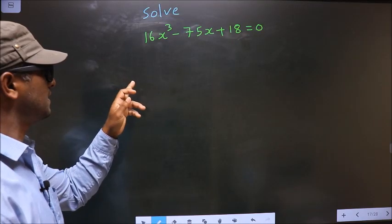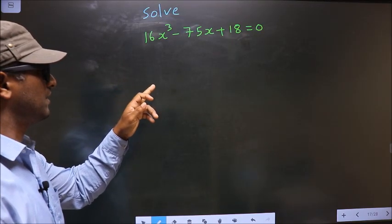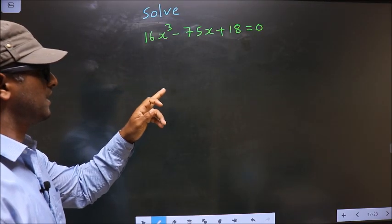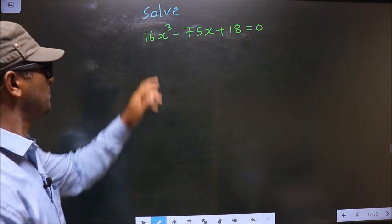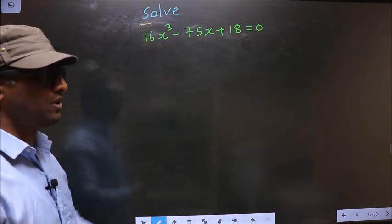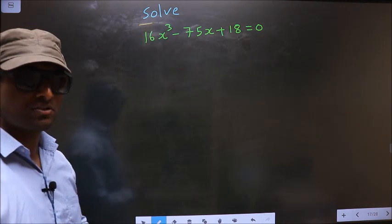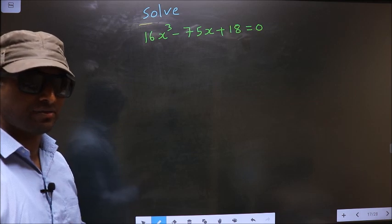Solve 16x cubed minus 75x plus 18 equal to 0. We are told to solve, so we should find the values of x.